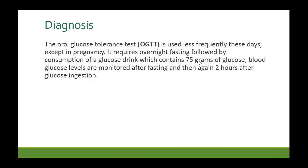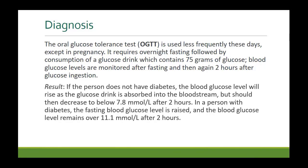Or you can take regular samples at one hour, two hours, and three hours, because you want to see how the glucose goes up and how it comes down. If the person does not have diabetes, the blood glucose level will rise and then come to below 7.8 millimoles per liter after two hours. In a person with diabetes, the fasting blood glucose is raised and after two hours it will be over 11.1 millimoles per liter.